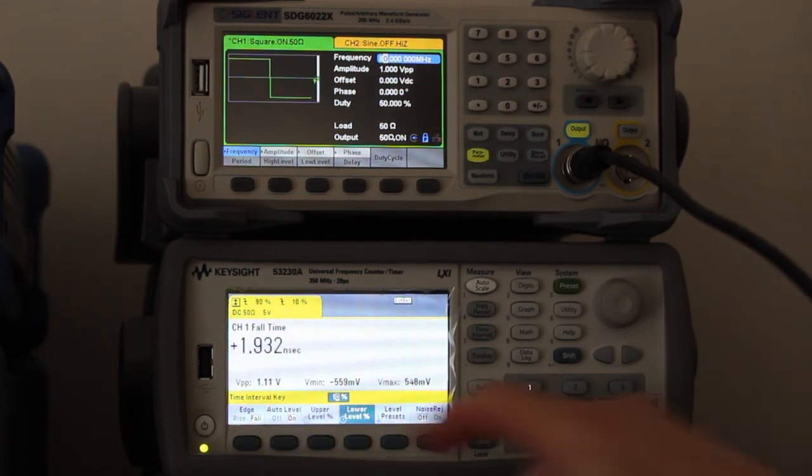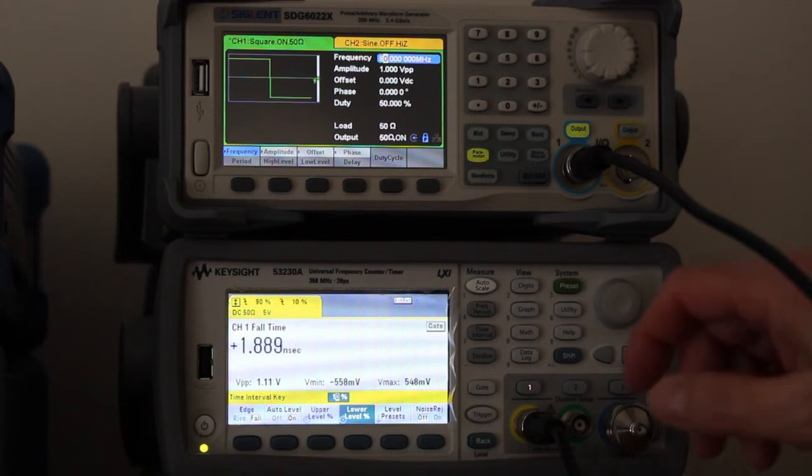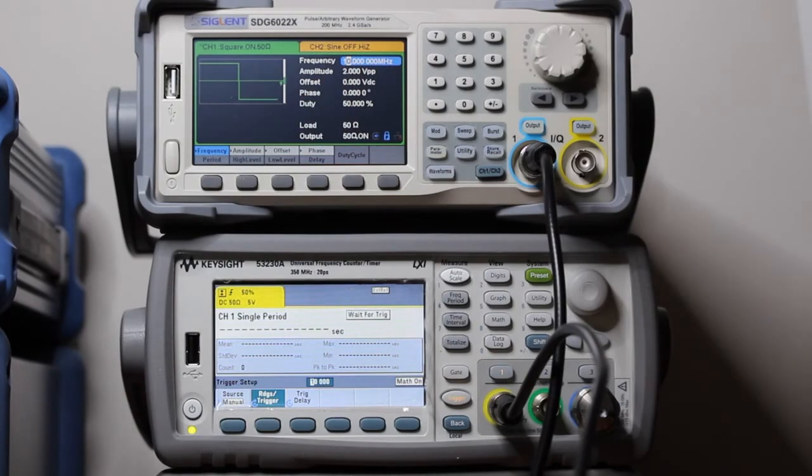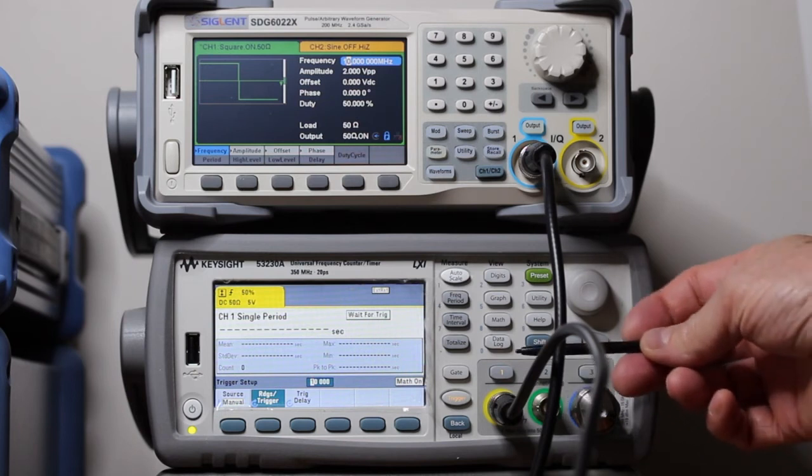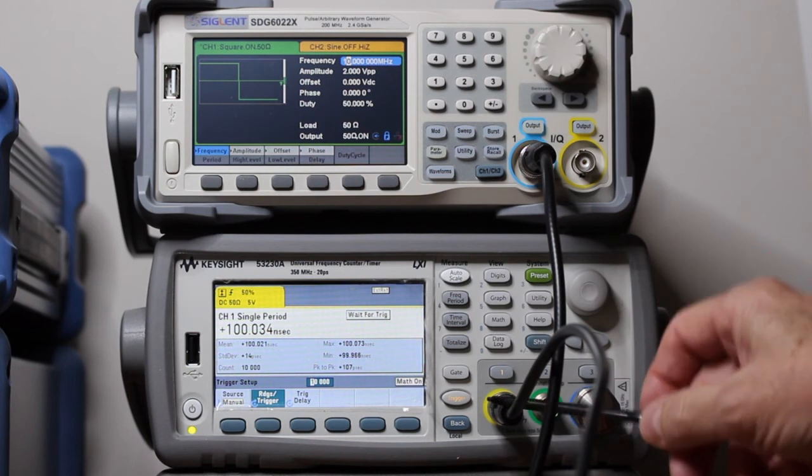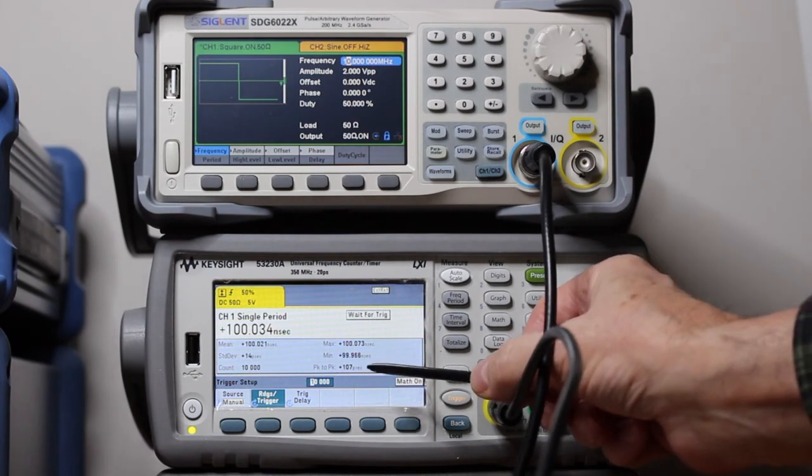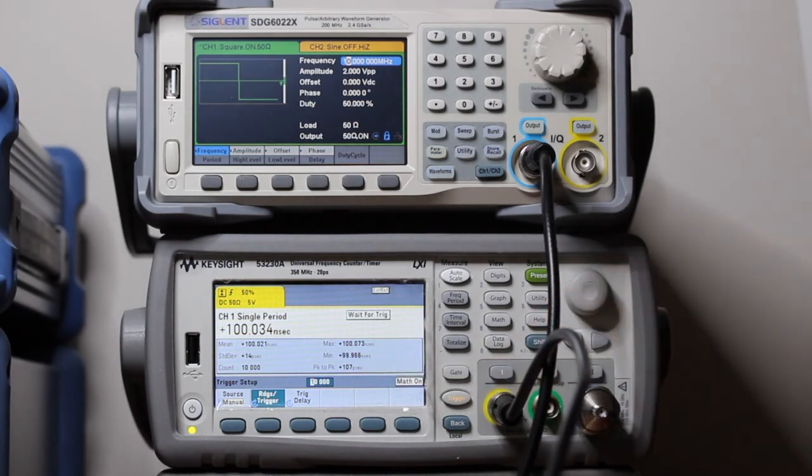Rise time less than 2 nanoseconds. Notice that the Keysight is in time interval mode and it will measure 10,000 adjacent periods of the wave.